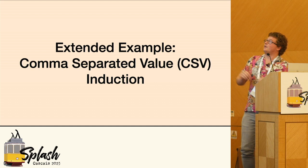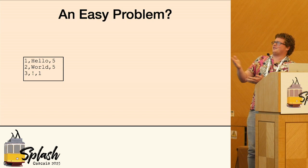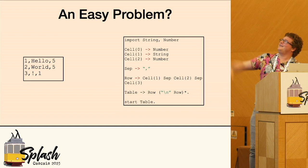So to do this, I'm going to do an extended example on CSV induction. You would think, okay, CSV induction — that's a kind of easy problem, right? Let's look at this CSV. I could come up with that grammar: it's a number, a string, and then a number, and there's commas in between. It's just comma-separated values. And so I could write this. There it is. Look at that. I have generated the grammar for this.